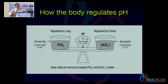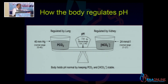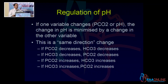For example, if there was a metabolic acidosis due to diabetic ketoacidosis, and the pH without any compensation would have been say 7.1, the body will alter the respiratory component to minimize the effect and move the pH towards 7.4 — but it will never actually become 7.4. You might get the pH to around 7.25 or 7.3. Compensation is an attempt by the body to minimize the impact of the primary disturbance on the pH.